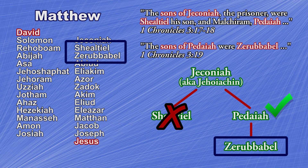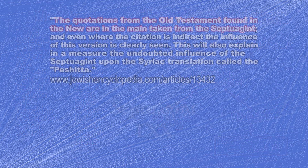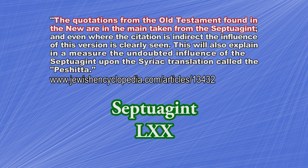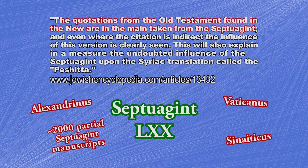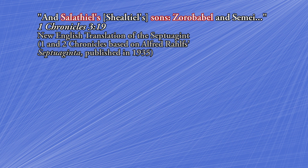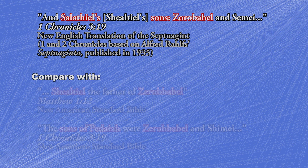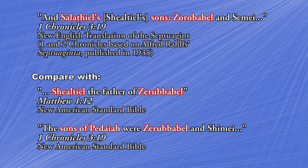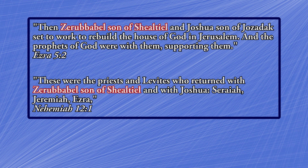When New Testament authors quoted the Old Testament, it is generally recognised that they usually use the Septuagint, which is the Greek version of the Old Testament. However, there are different variants of the Septuagint which contain different readings. At least one variant does indeed state that Zerubbabel's father is Shealtiel. So in this instance, Matthew may have simply copied the reading he had in front of him rather than make any changes himself. Elsewhere in scripture we see Shealtiel and Zerubbabel listed as father and son, so perhaps this reading is correct.